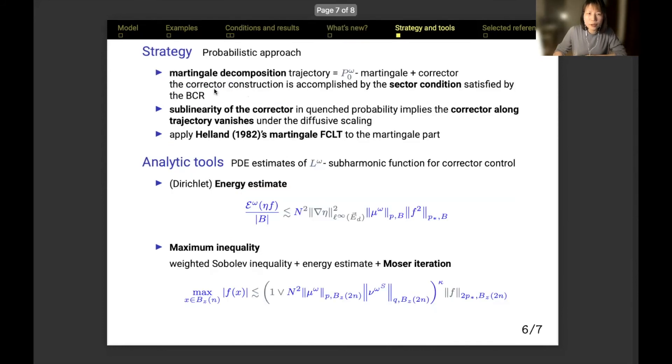The proof strategy we employ is probabilistic, which has been heavily foreshadowed when I'm presenting the results. To restate, the first is to have martingale decomposition for the trajectory. What has not been mentioned is to construct the corrector, we rely on sector condition that controls the effects of the anti-symmetric part by the effects of the symmetric part. This is satisfied by the bounded cycle representation. Second, the corrector is negligible for especially being sublinear. Third, we apply Helland's martingale FCLT to the martingale part.